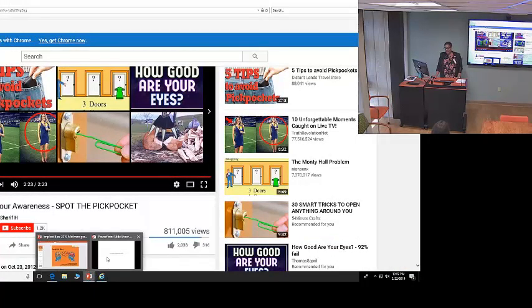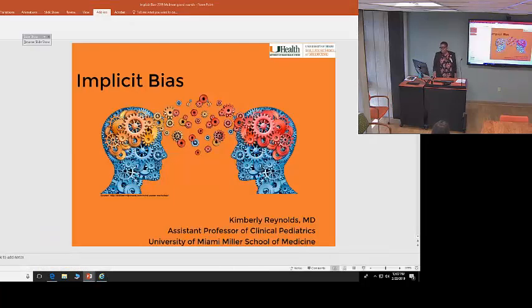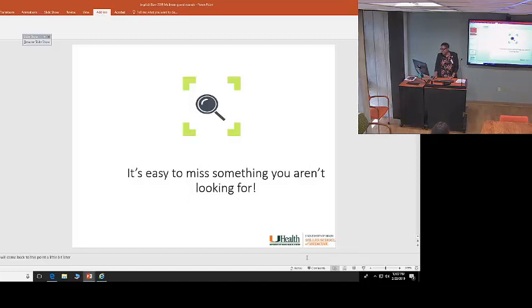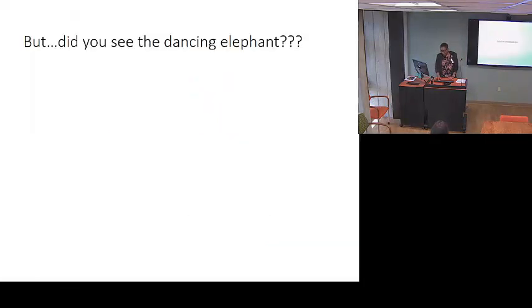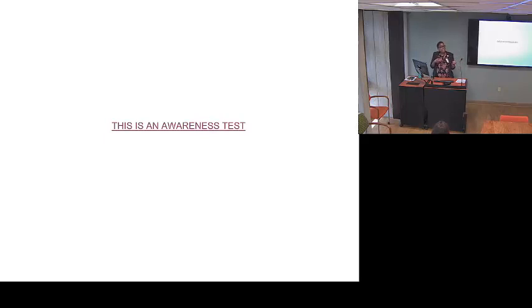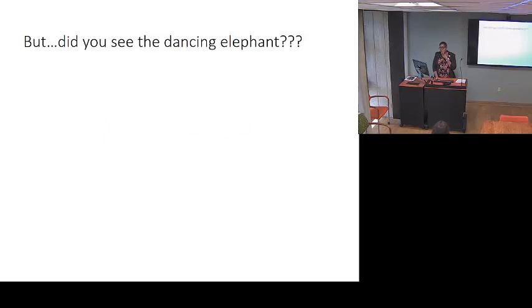I've never had anyone actually see it before, but once you see it you're like, how could I have missed that? The whole purpose of this is that it's easy to miss something that you're not looking for. Implicit bias is that thing — I want to convince you by the end of the day that implicit bias is affecting all of our interactions on a day-to-day basis, and we just might not see it because it's unconscious.